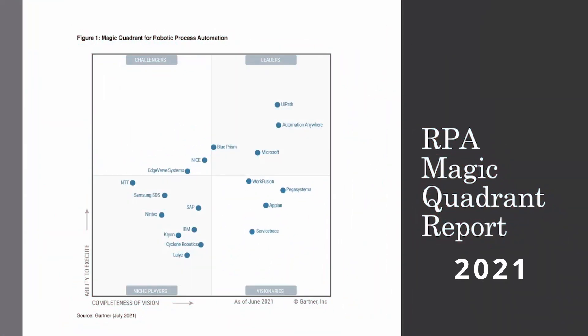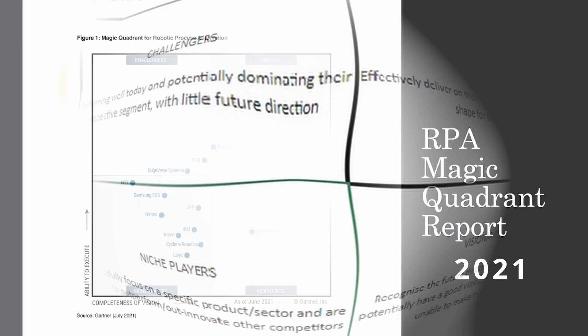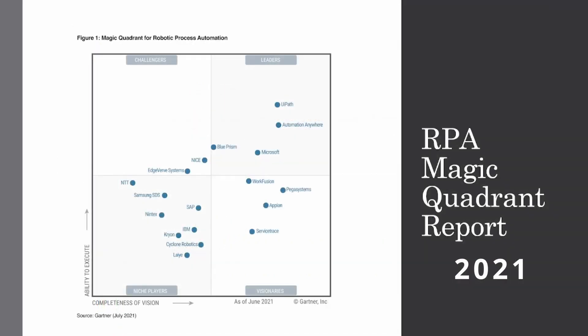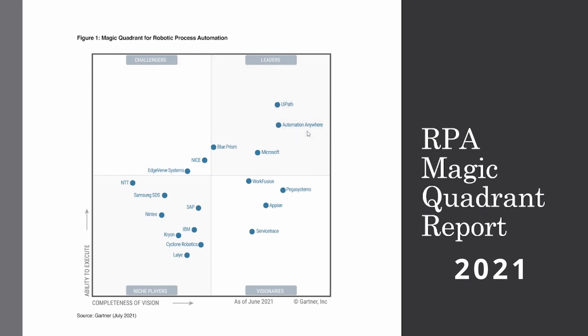There is something called a Gartner Magic Quadrant. Gartner is a technology company that does research on different software vendors, and they have placed the majority of the leading RPA vendors inside a magic quadrant to show which ones are leaders, which ones are niche players, challengers, and visionaries. Microsoft, we can see it right here, is with the leaders, and the leaders are UI Path and Automation Anywhere.